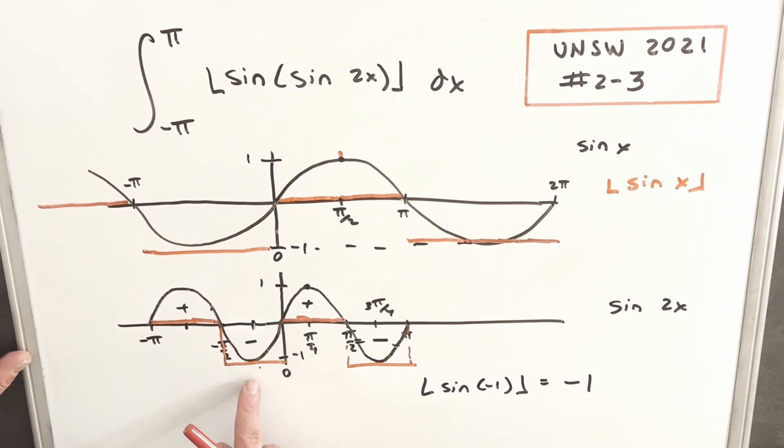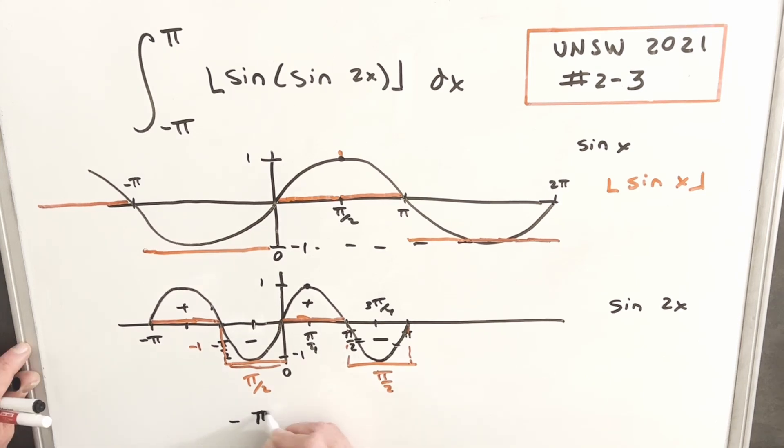To find the value of our integral, we're just going to calculate the area of these two rectangles, knowing that the height is minus 1. This length is π/2, and this is π/2 as well. These two rectangles are going to have the same area. This one's going to be minus 1 times π/2—the area is π/2, but it's negative because it's underneath the x-axis. This one as well will be the same thing, minus π/2. For our solution, we're going to have our area as minus π.